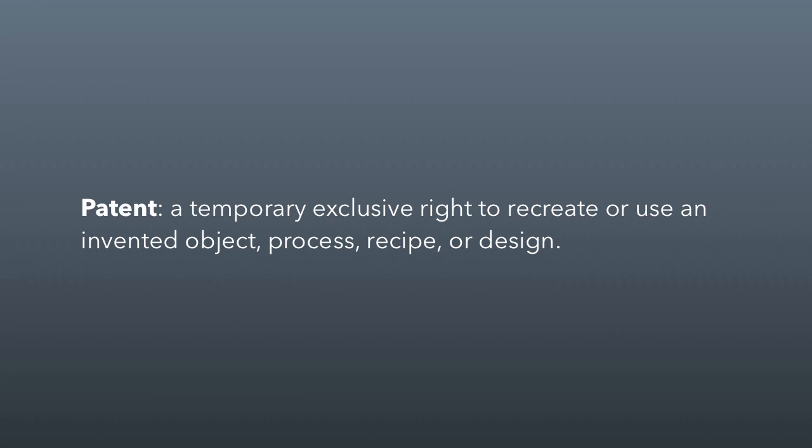Another form of protection is a patent — a temporary exclusive right to recreate or use an invented object, process, recipe, or design. Patents are temporary because we want the knowledge to eventually enter the public sphere. This is why medicines invented by pharmaceutical companies eventually go generic: when the patent expires, everyone can make it, which makes the world a better place.